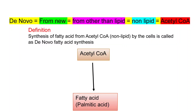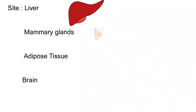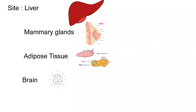That is why it is called de novo fatty acid synthesis. The site of fatty acid synthesis — the important tissues and organs where it happens — are liver, mammary glands, adipose tissue, and brain.